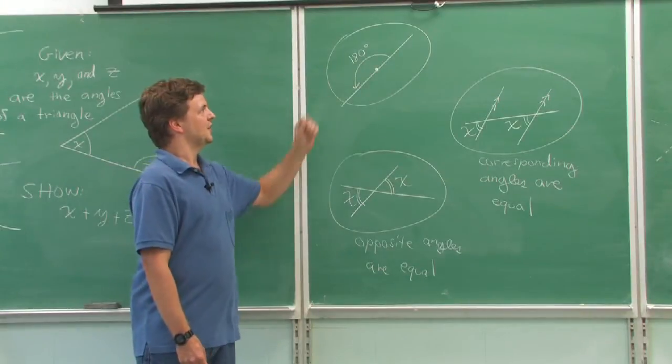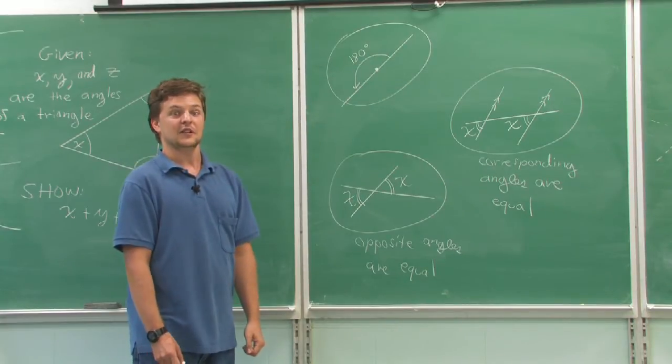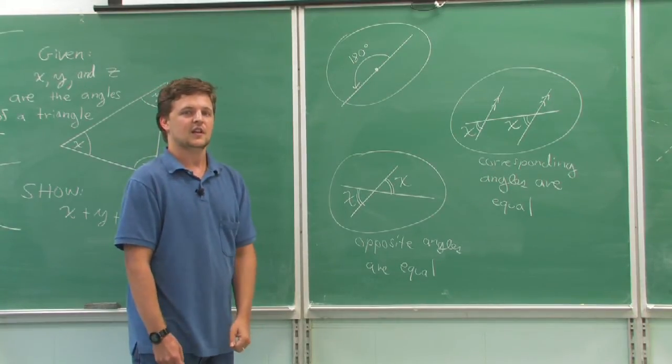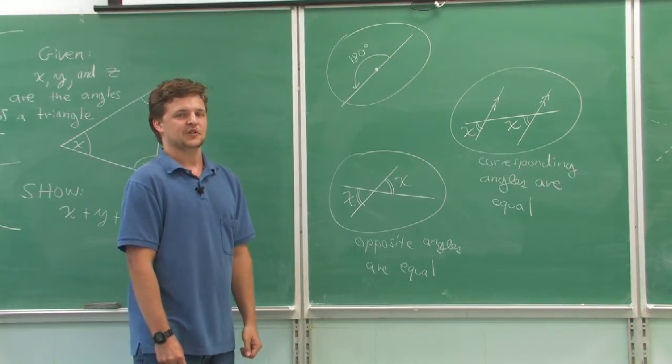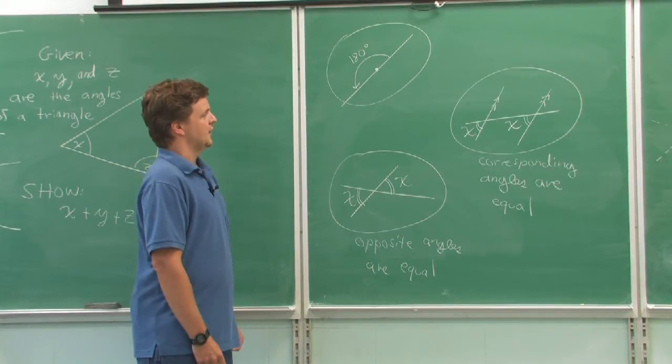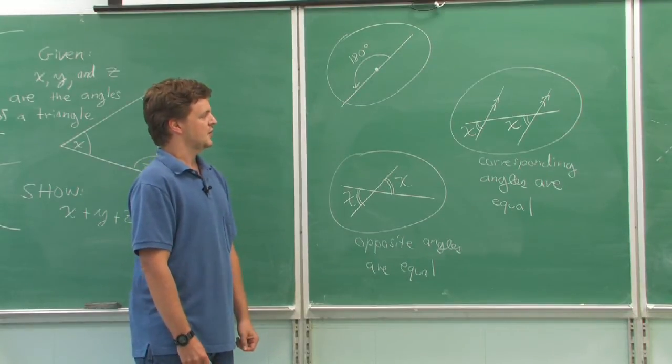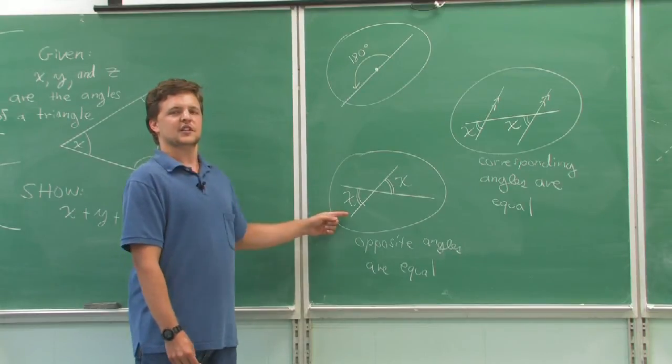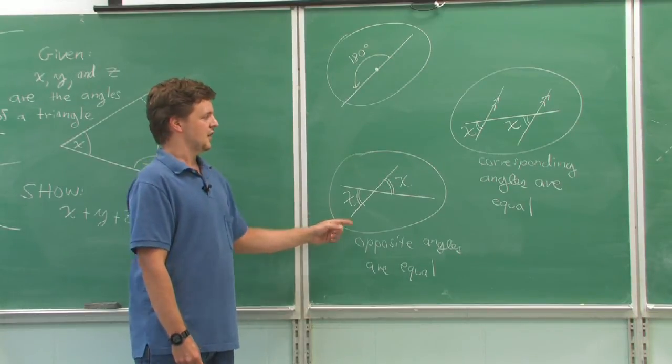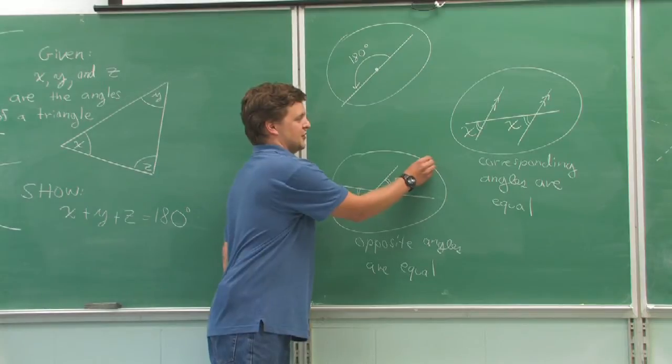Now, this top one is closer to your finish since 180 degrees is what we're trying to show these angles sum to. The other two, we could try and start with either of them, but actually this one is closer to the beginning. So our proof is going to go in this order.